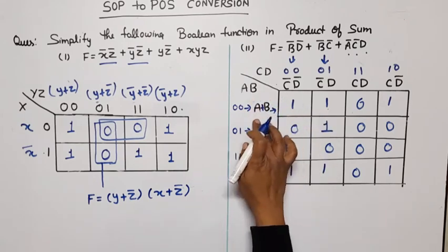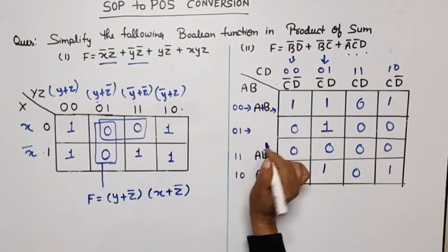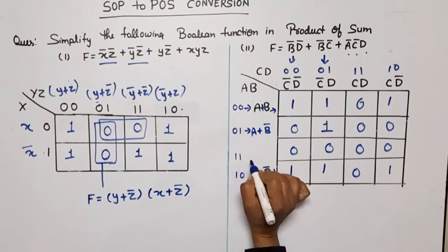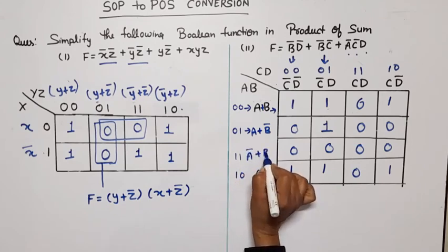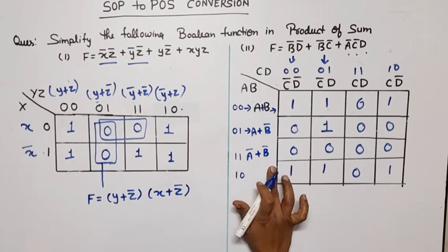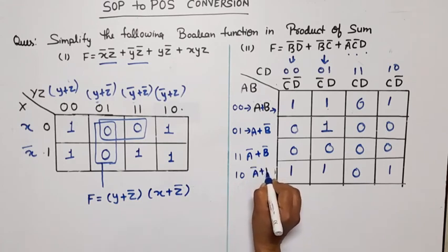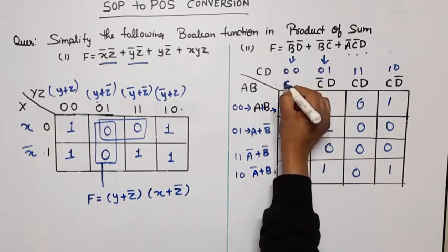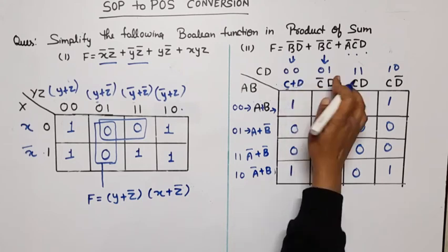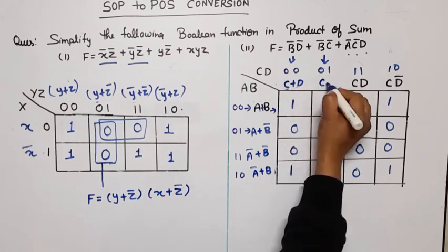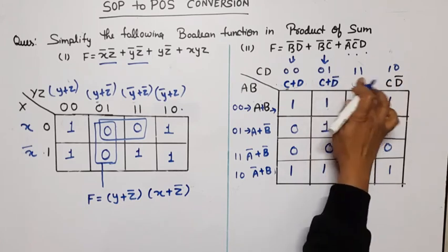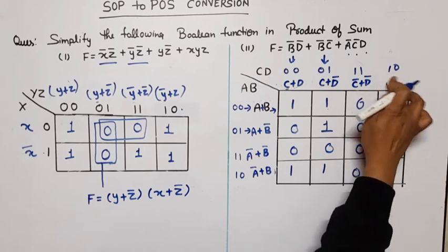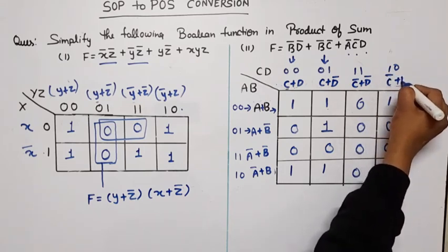Reading the maxterms: 0-bit means the variable appears as-is, 1-bit means complemented, all connected with plus. So: (a+b), then (a+b̄) where 0→a and 1→b̄; for both-1 cells we get (ā+b̄); for a=1 we get (ā+b). For the cd columns: 00 gives (c+d); c=0 and d=1 gives (c+d̄); both 11 gives (c̄+d̄); c=1 gives (c̄+d).